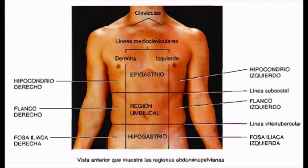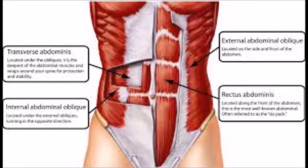In the lower right quadrant is the ascending colon and the appendix, part of the small intestine, the right half of the femoral and reproductive system, and the right ureter.